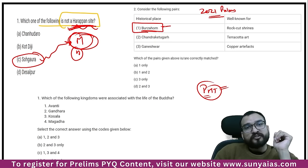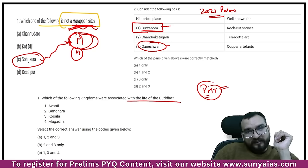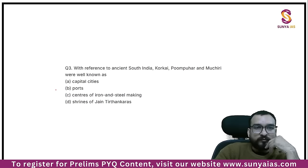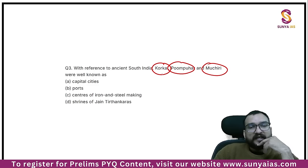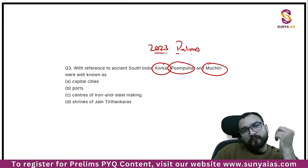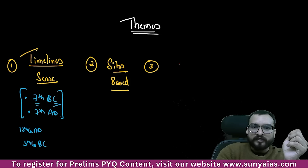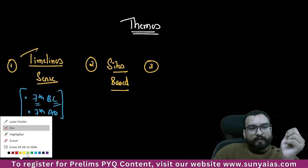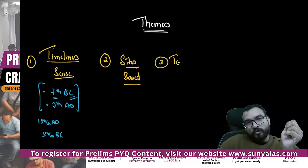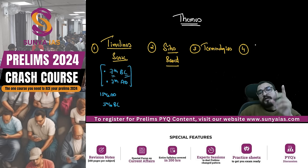I'll show you when we discuss this question how it is a very easy question but 99% of people have not solved it. Burzahom is a prehistoric site, Kaneshwar is a prehistoric site. In the 2021 question, sites related to the life of Buddha — Avanti, Gandhara, Kosala, Magadha — again, sites are being focused upon. And in 2023 Prelims, Korkai, Poompuhar, Muchiri are being asked. So they are focusing upon sites and terminologies — terminologies can also be included as a theme.